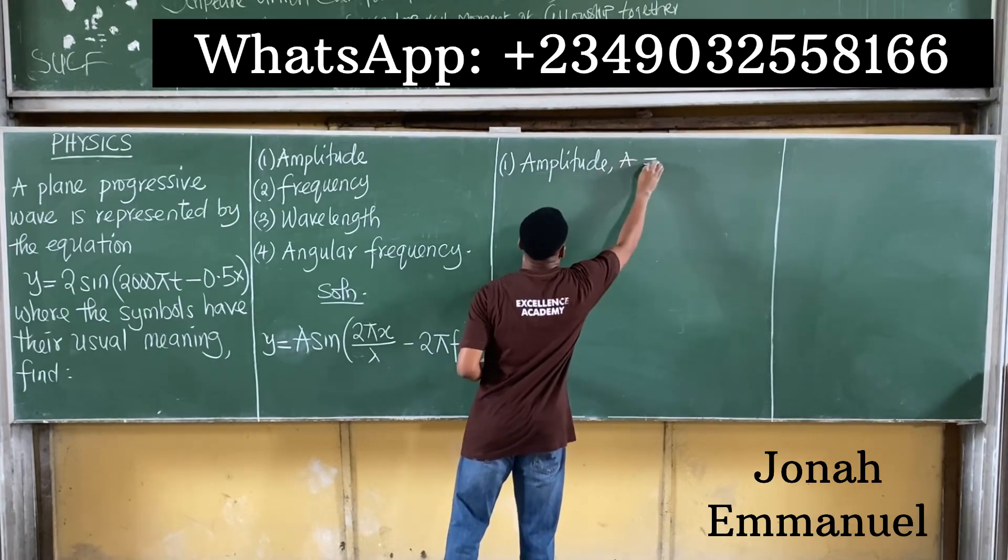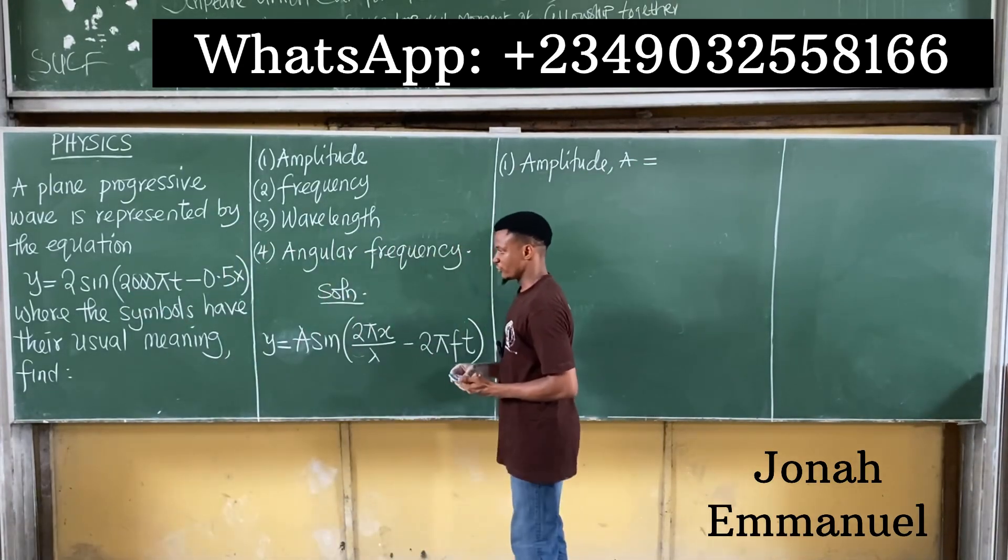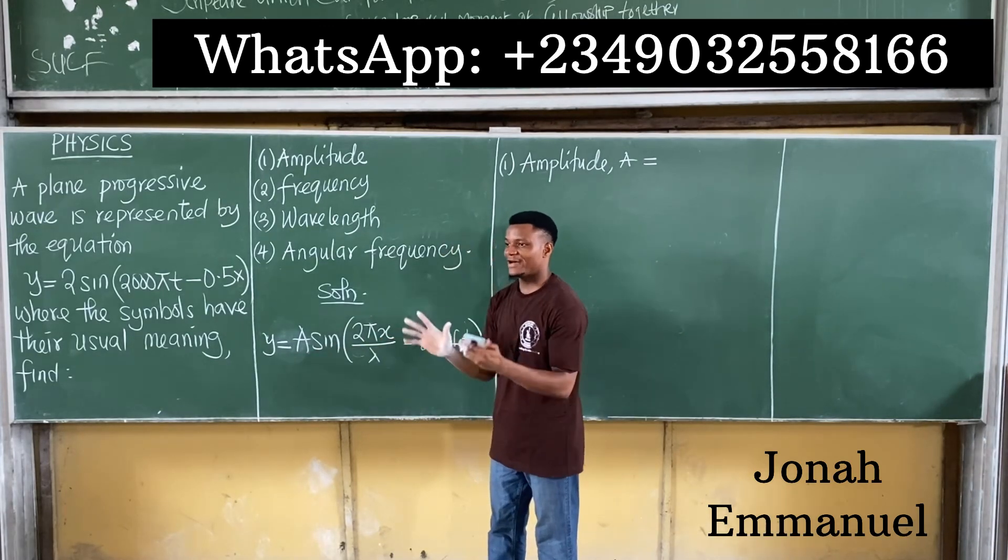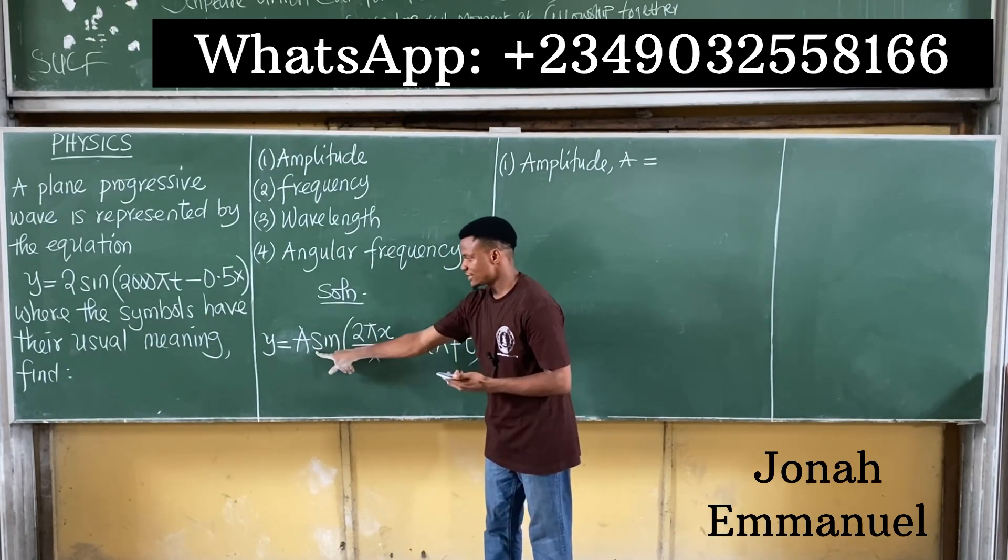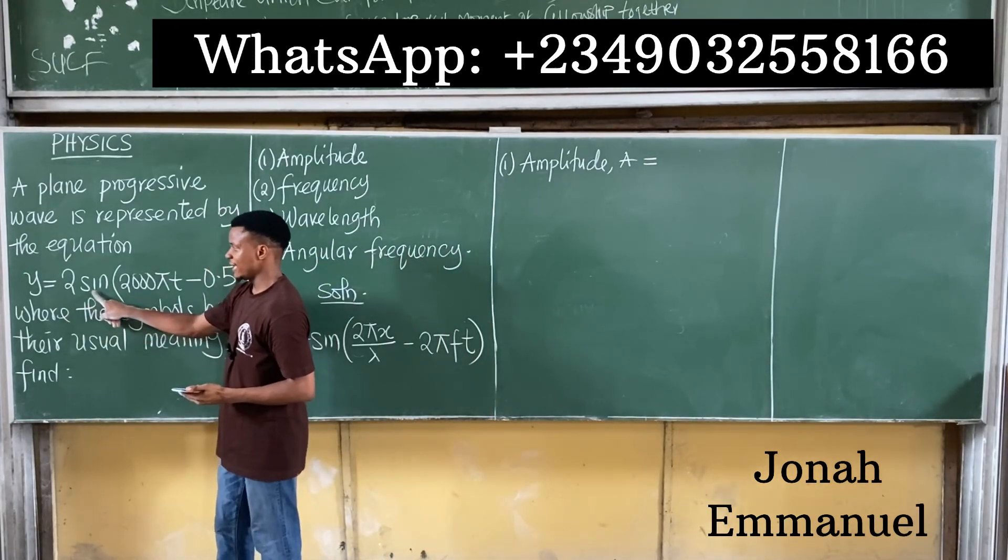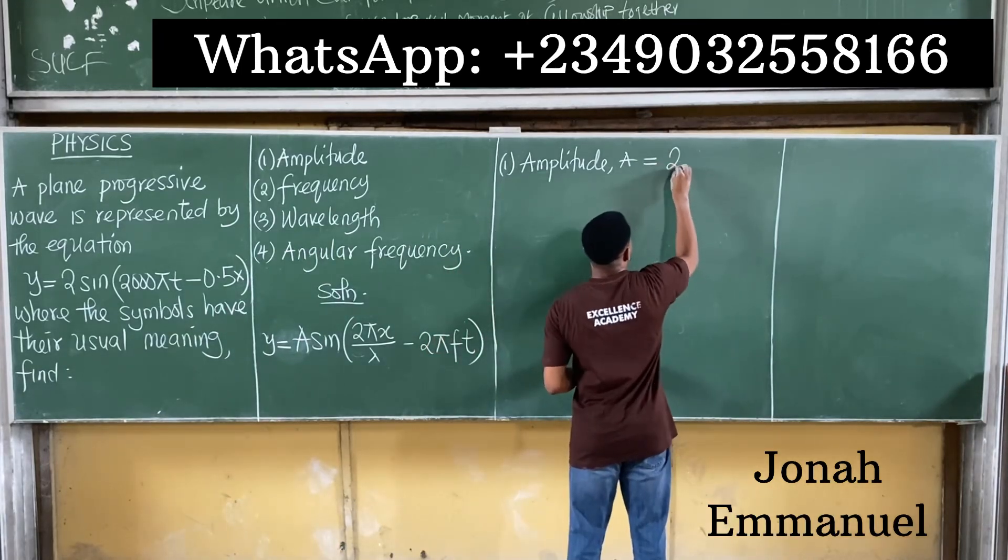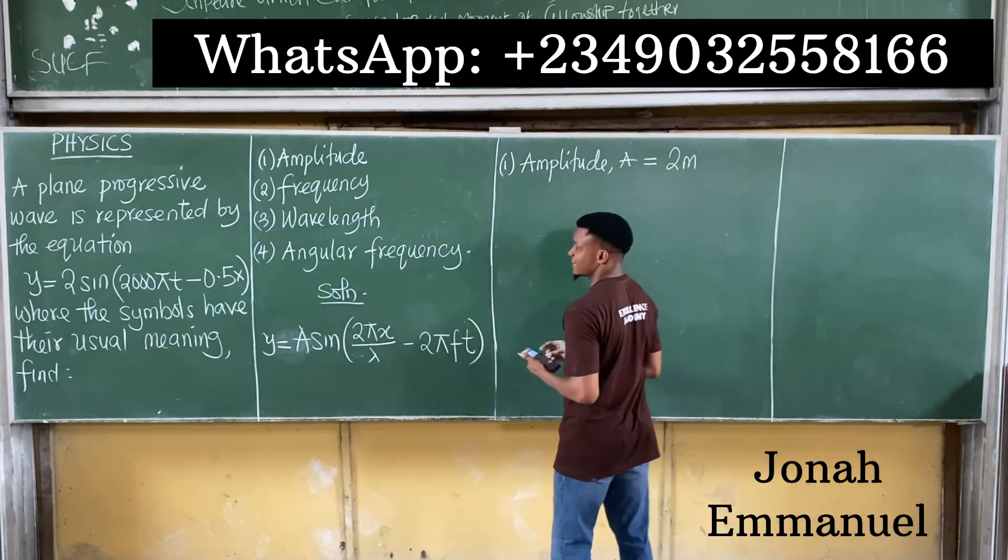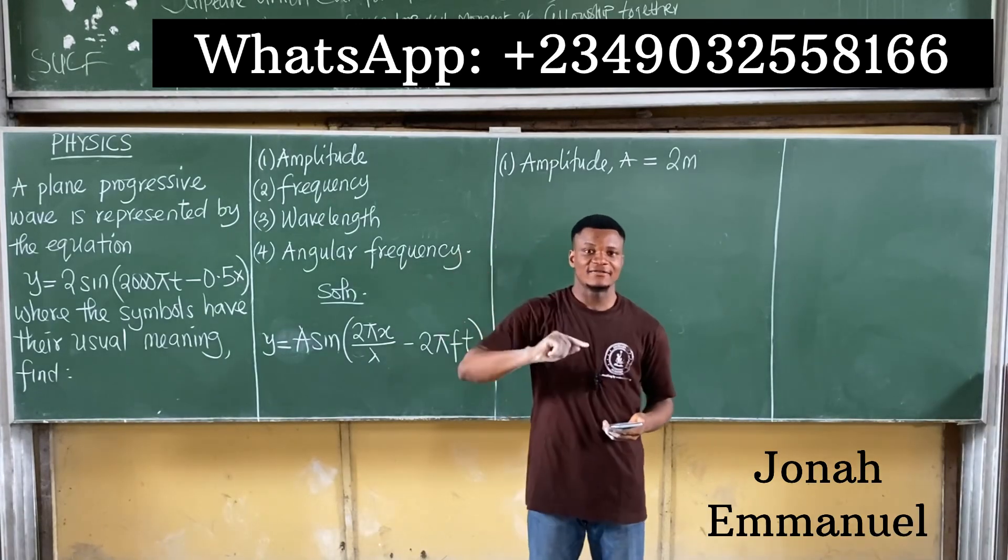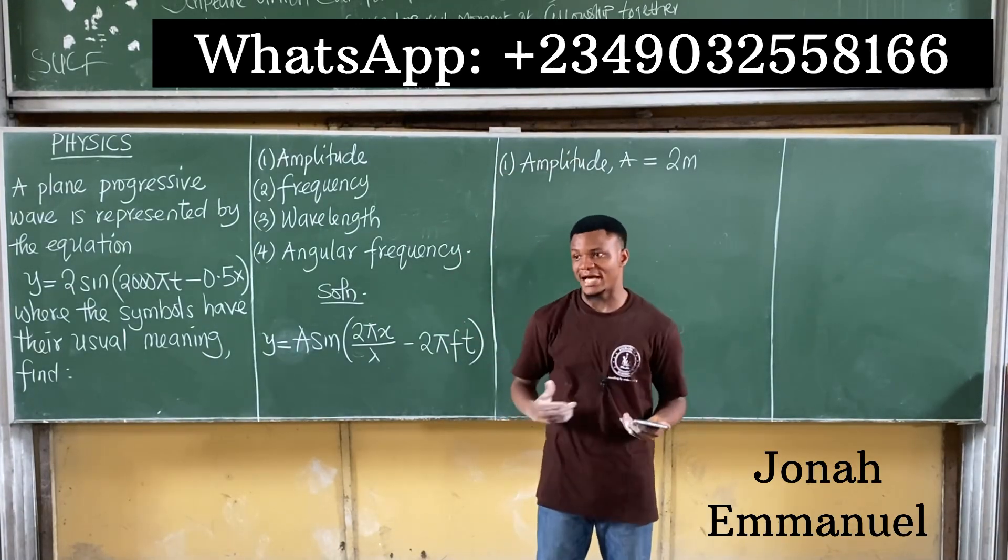Amplitude A will be equal to, if I look at these two equations, you'll see that A or the amplitude is whatever thing is attached to sine. So if I look at this here, what is attached to sine here is 2. So hence, the amplitude becomes 2. The amplitude will be in meters.